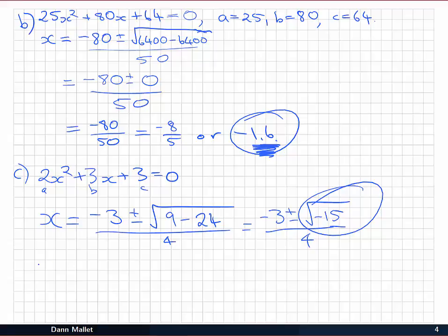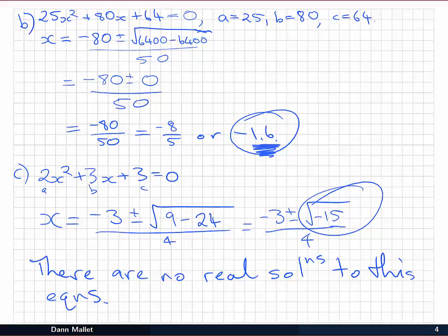There's no solutions that are real numbers. So we can just summarize that now. There are no real solutions to this equation. Now that's not to say there are no solutions at all. There are solutions, they just happen to be complex numbers. And that is them there in an unsimplified form. But for our purposes, we'll say there are no real solutions.